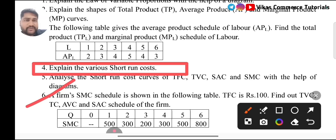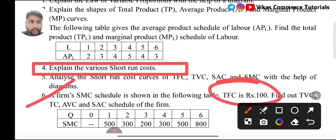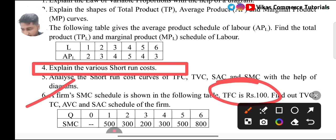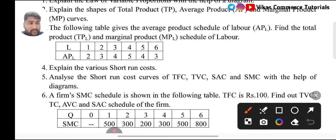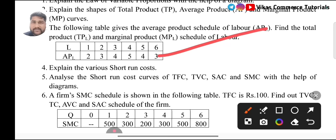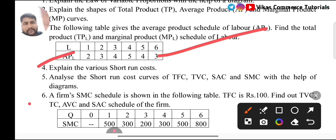In Question 6, the firm's SMC schedule is given along with total fixed cost of 100 rupees. You need to find total variable cost, total cost, average variable cost, and semi-average cost — four costs for 6 marks. The most important are Question 4 and Question 6. Question 3 is also there — average product of labor is given and you need to find total product and marginal product, which is very easy. They might not ask it, but if they do, it is a bonus. Study Question 4 and Question 6 as most important.